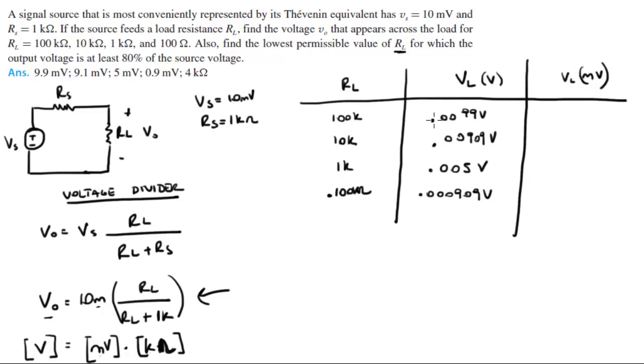And if you plug in the 0.1K or 100 ohms you should get 0.000909 volts. And when you convert this to millivolts all you need to do is move the decimal place one, two, three spaces and you get 9.9 millivolts. One, two, three spaces you get 9.1 millivolts. One, two, three spaces you get 5 millivolts, and one, two, three spaces you get 0.91 millivolts approximately.